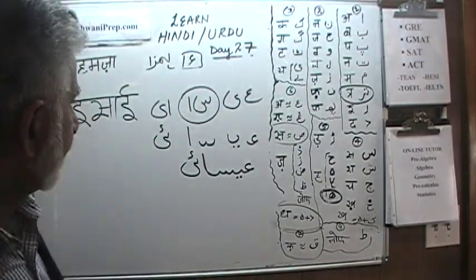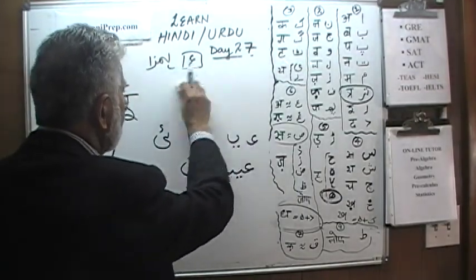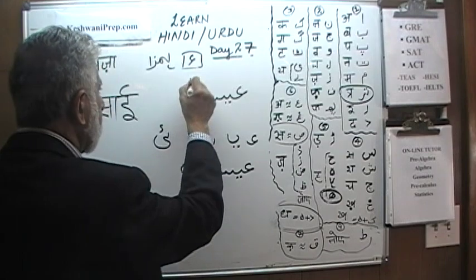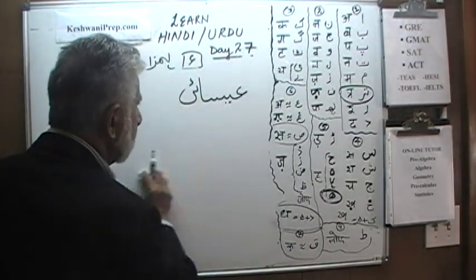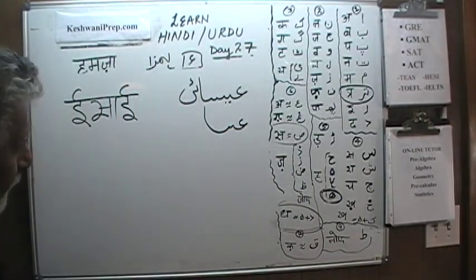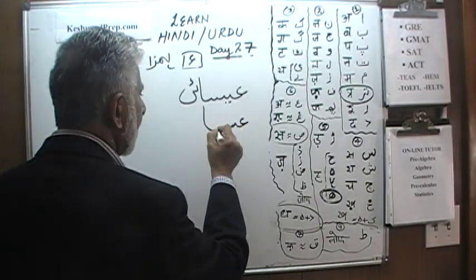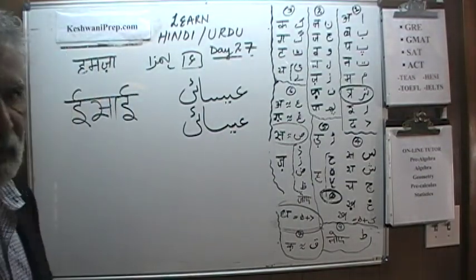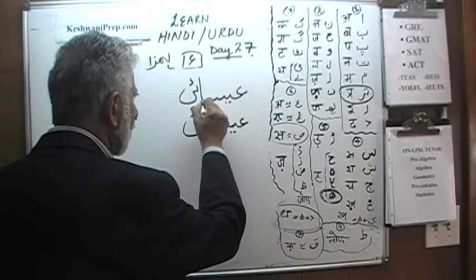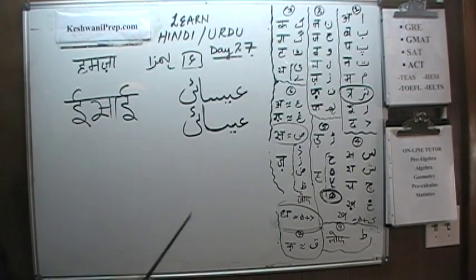You could also write 'Isai' with a different approach — E and then a continuing stroke for Sa — instead of making two loops for Sin and one more for Aleph, you just continue with one big stroke. It saves time and is perfectly acceptable. That's 'Isai.'